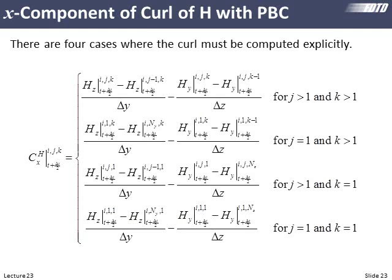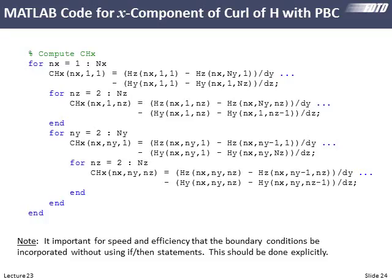For the magnetic field, the first equation is the bulk equation done almost everywhere, and the last three equations handle the Y low and Z low boundaries — the X low boundary fix would appear in the Y and Z components of curl instead. Here's the MATLAB code for it — no surprises, and importantly, no if statements.